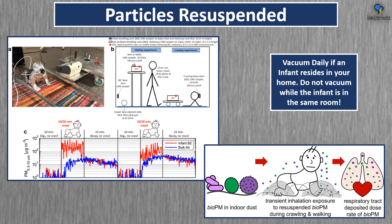One report said that an average home produces 40 pounds of dust a year. Most of that dust lands on the floor, not in your HEPA filter. When a baby crawls along the floor, it's inhaling all that dust as it becomes re-aerosolized. So if you have an infant in your home, it's very important to vacuum daily to ensure the baby does not inhale as much dust.